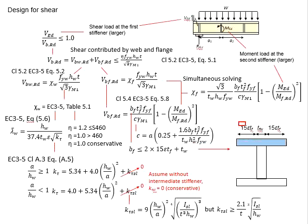The BF here is limited to 2 times 15 epsilon t_f,flange plus the thickness of the web. Theoretically, beyond the limit of this 15 epsilon t_f,flange, the flange is considered to not contribute to any shear resistance of the member. In another word, the flange within this limit is considered contributing to the shear resistance of the member.